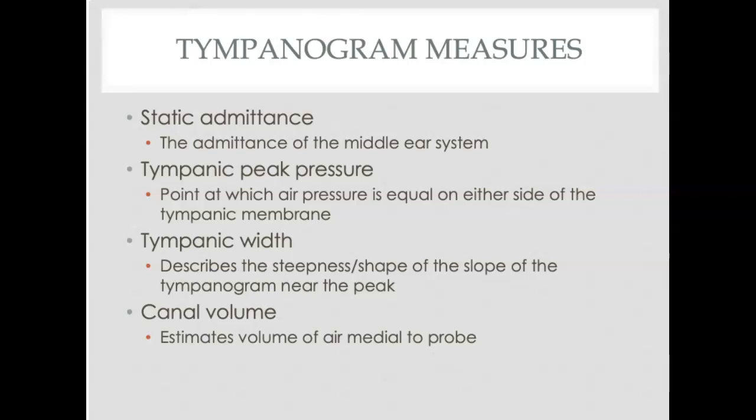Here are some values that we use: static admittance, which is the admittance of the middle ear system; tympanic peak pressure, which is the peak of the tympanogram; tympanic width, which is how wide it is; and then the ear canal volume, which essentially estimates how much volume is in the ear canal when you're doing the test.